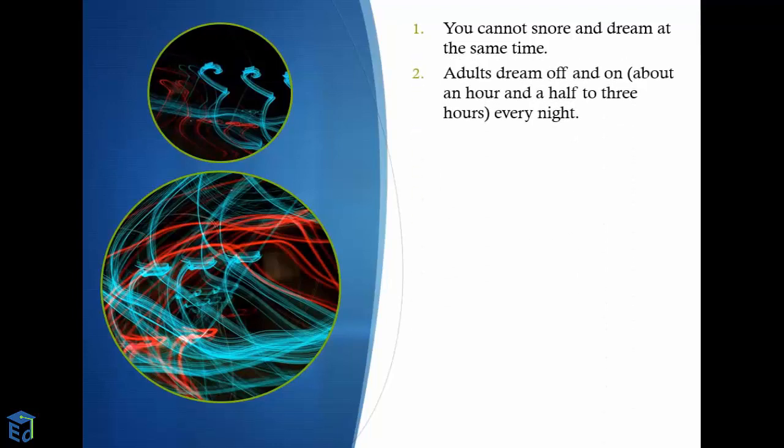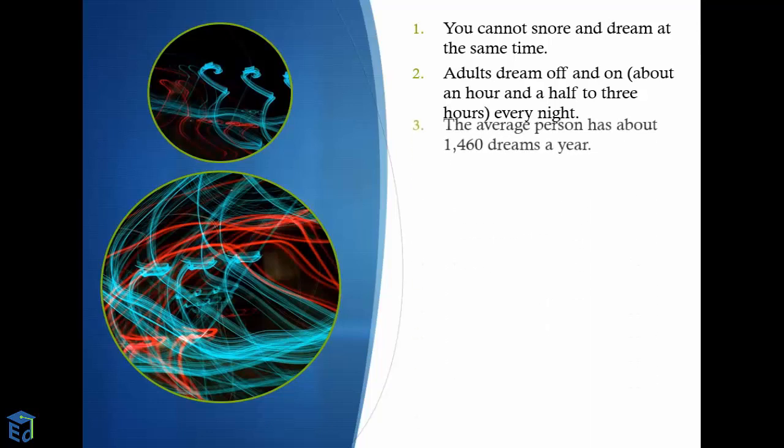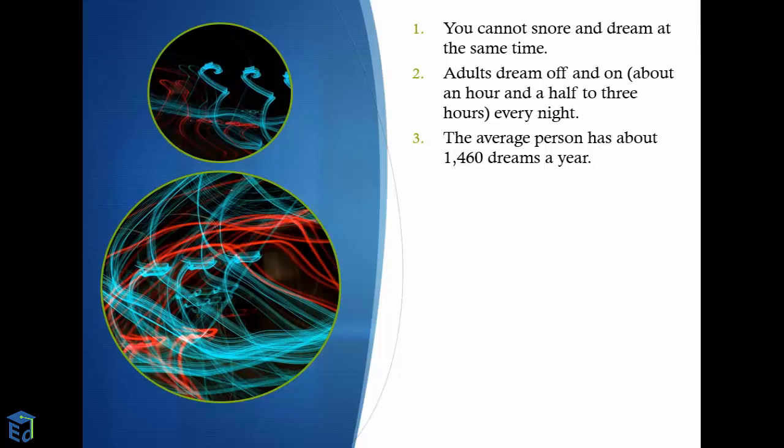Adults dream off and on for about an hour and a half to three hours every night. The average person has about 1,460 dreams a year, which is about four dreams per night.